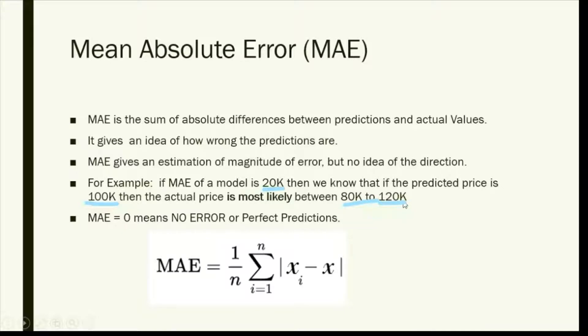If it's 100,000, then the actual price is most likely to be 80,000 to 120,000. How is it ranging? I'm taking this Mean Absolute Error - it can deviate 20 to the lower side and 20 to the higher side.